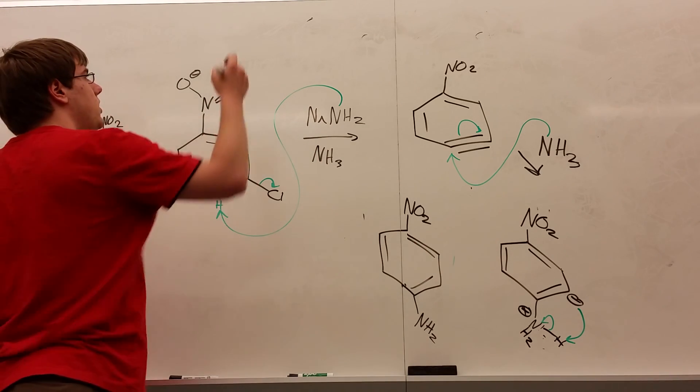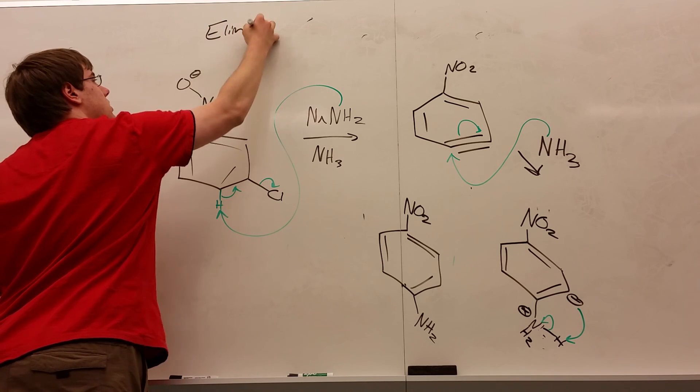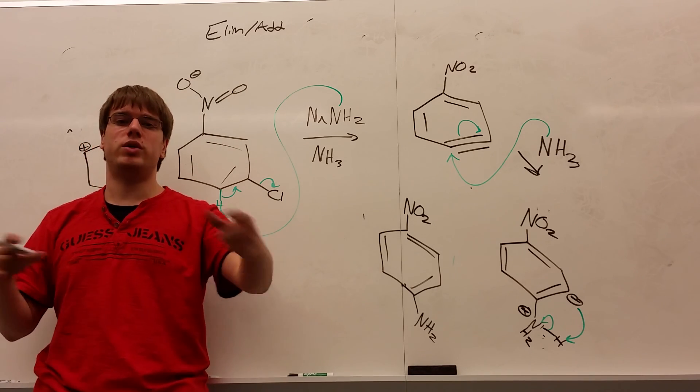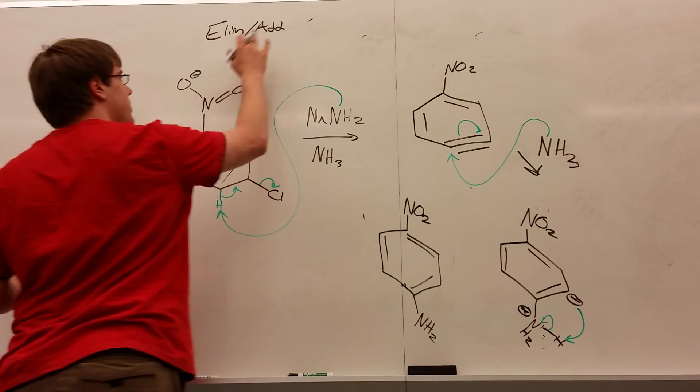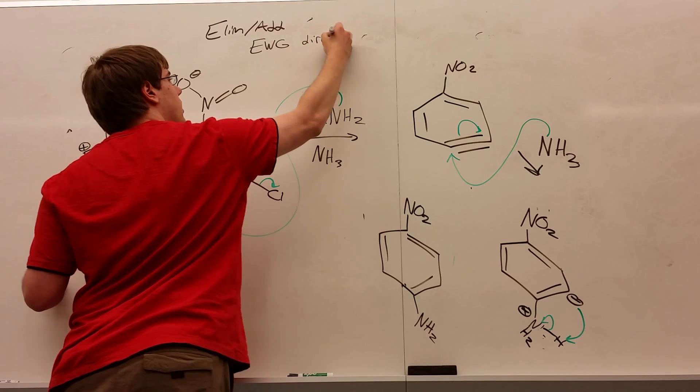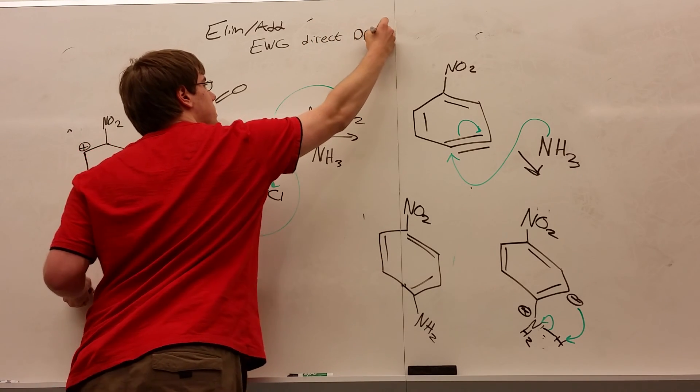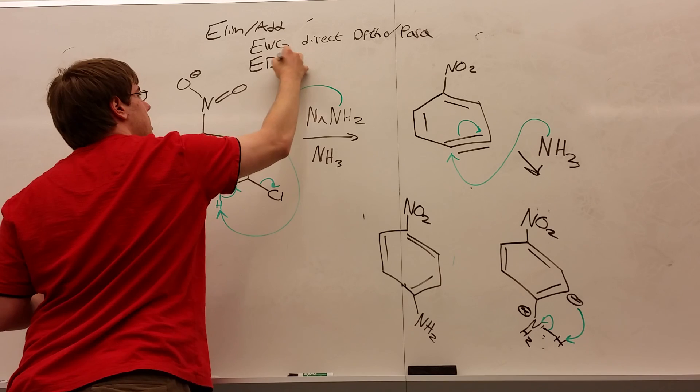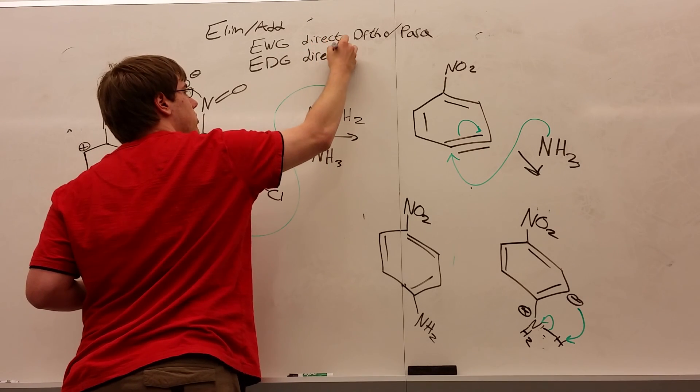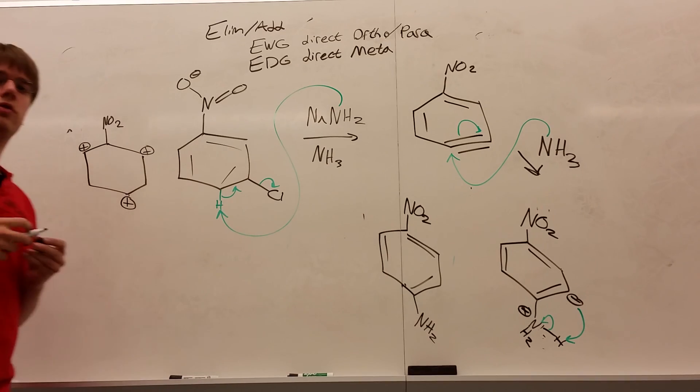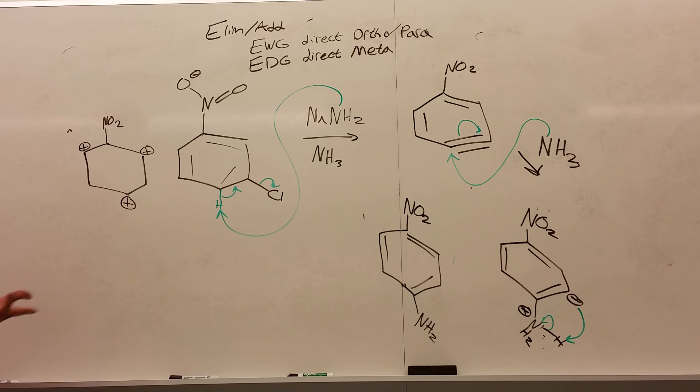So what can I say from this? When it comes to elimination-addition problems, your rules about how donating and withdrawing groups direct is kind of the opposite of what we taught for the first exam. Specifically for elimination-addition reactions, EWGs, electron withdrawing groups, direct ortho-para, because they put positive charges in that position when the benzyne is attacked. Electron donating groups, on the other hand, put negative charges on the ortho-para position, which repels the nucleophile from coming in there. So EDGs direct meta. Both of these are opposite what you learned for the first exam, and are only specific to this benzyne-creating reaction. And that's the gist of these elimination-addition reactions. Thank you.